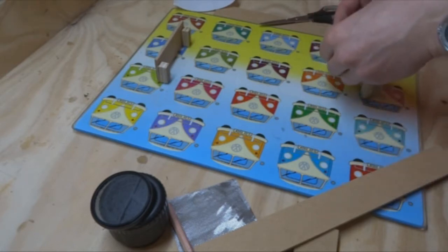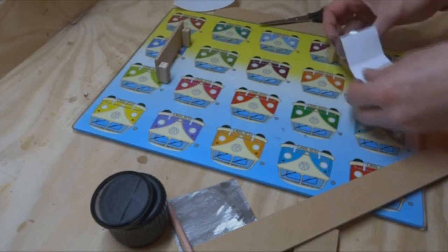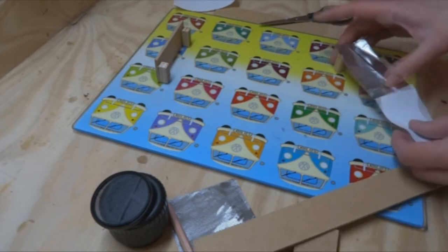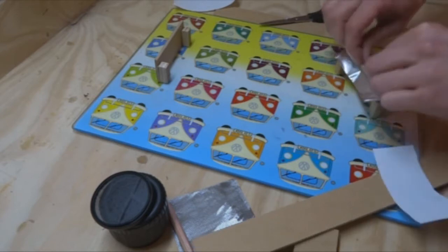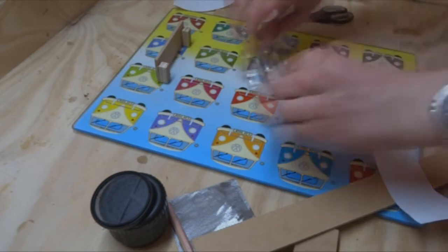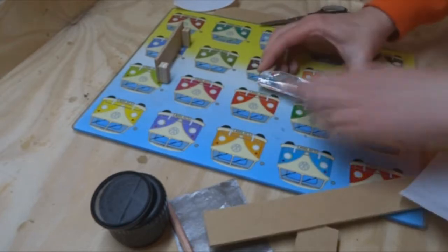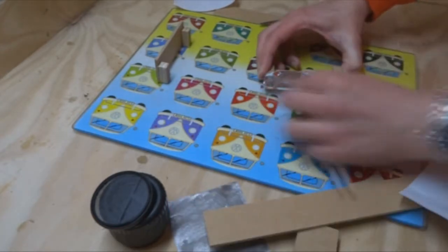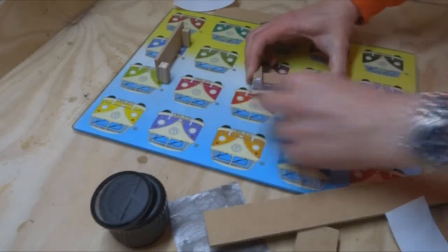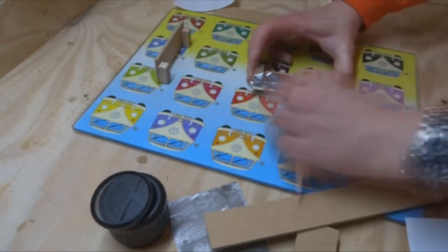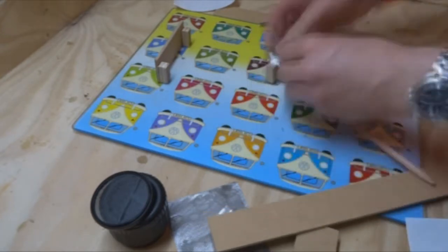Now, this foil tape's a product which is designed for edging expanded polystyrene insulation, like Kingspan-type board, and this is what they use to seal the edges of it. But essentially, it's thin, self-adhesive aluminium foil.